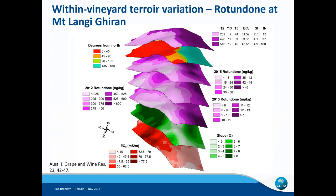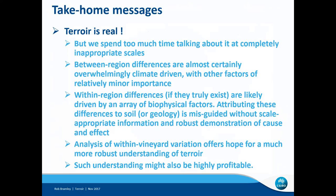The take-home messages: clearly terroir is real. There have been some commentators, including Mark Matthews from UC Davis who wrote a book about the mythology of terroir, calling into question the extent to which terroir is real. But there's no doubt in my mind that terroir is absolutely real — we just spend far too much time talking about it at completely inappropriate scales. Most people focus on between and within region differences. Those between-region differences are almost certainly overwhelmingly climate driven, with other factors of probably relatively minor importance. Within-region differences, if they exist, are likely driven by an array of biophysical factors, and attributing those to just one or two — whether soil, geology, or something else — is pretty misguided without scale-appropriate information and a robust demonstration of cause and effect.